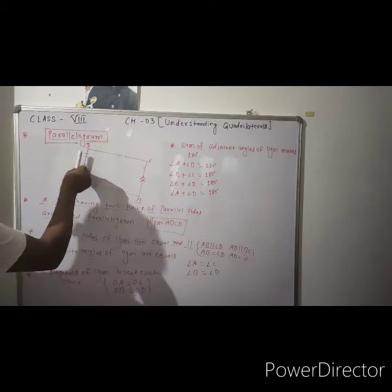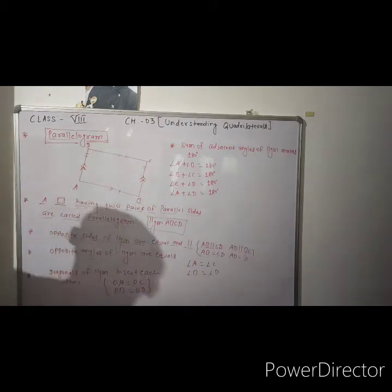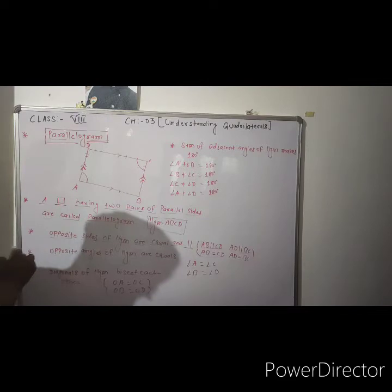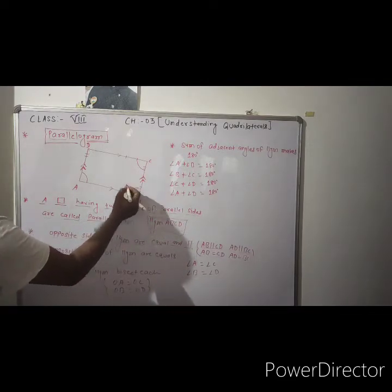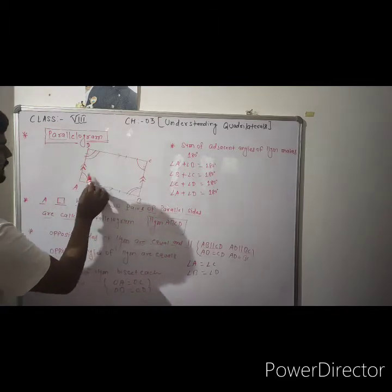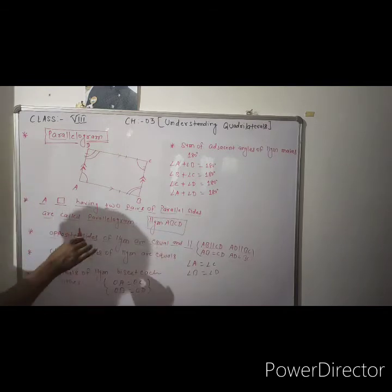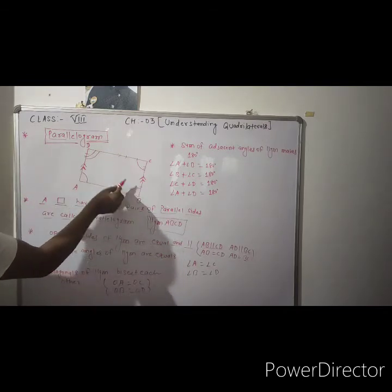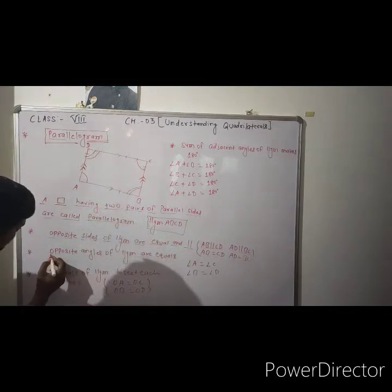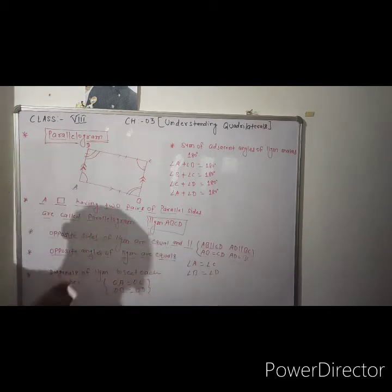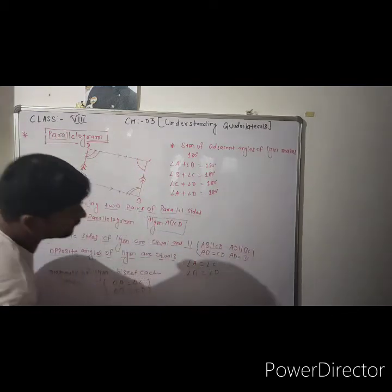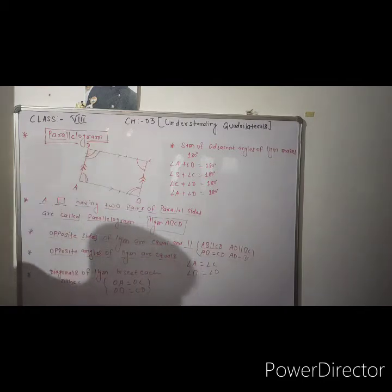The opposite sides are parallel and equal. Now the next property is opposite angles. Angle A and angle C are the opposite angles, and angle B and angle D are the opposite angles. The opposite angles of a parallelogram are equal, so we can write angle A equal to angle C and angle B equal to angle D.